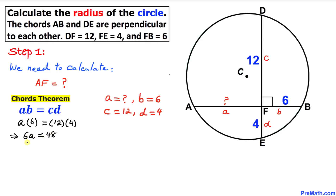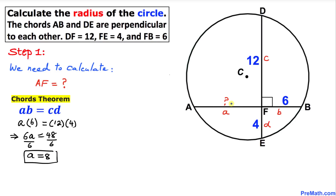Dividing both sides by 6, A turns out to be 8. Since A is the same as the AF part, therefore AF equals 8.